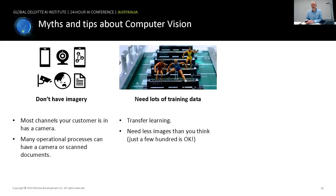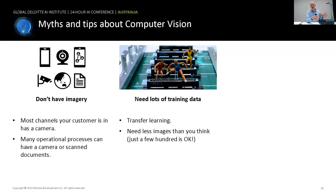The next myth is that computer vision needs a lot of training data. With modern techniques like transfer learning, you actually don't need as much training data as people think. With as little as two or three hundred images you can get started. Transfer learning works by taking models that have been trained on millions and millions of images — models that have learned to detect textures, shapes, and features — and then just doing the last fine-tuning for your particular use case. This allows you to get started much quicker than people originally think.